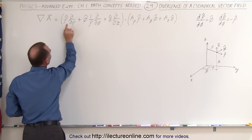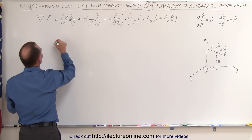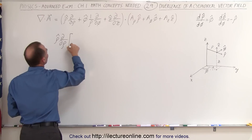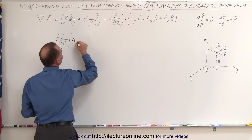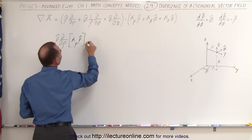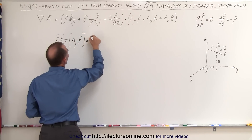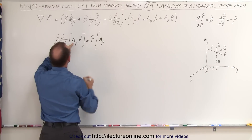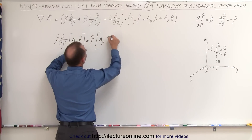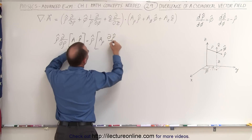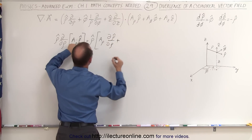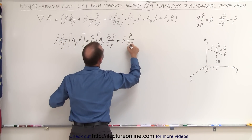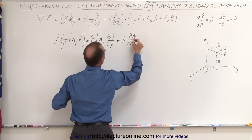So we have rho-hat times the partial with respect to rho of the first term. Since that's a product, using the product rule this equals rho-hat times: the first factor A-sub-rho times the partial of rho-hat with respect to rho, plus rho-hat times the partial of A-sub-rho with respect to rho.